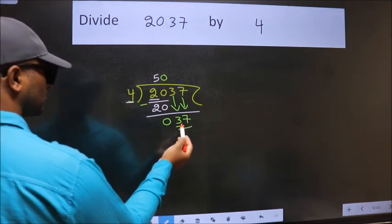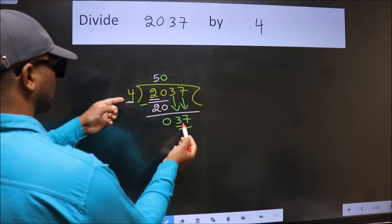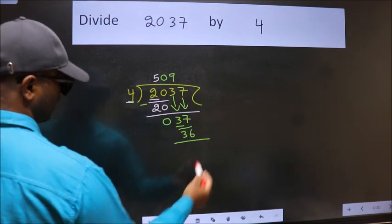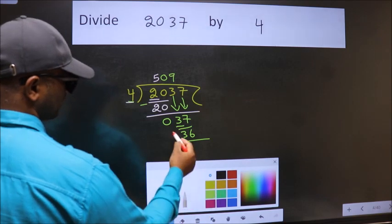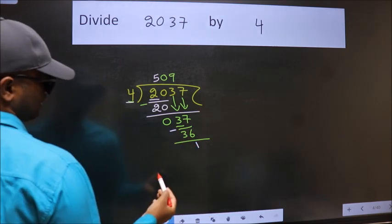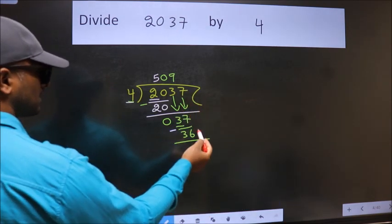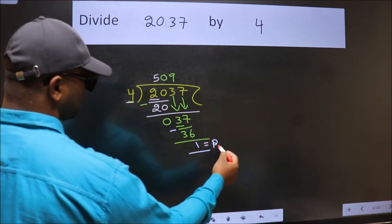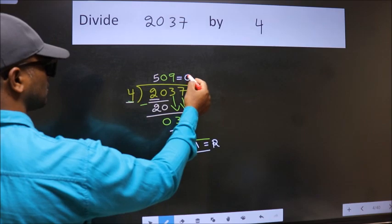A number close to 37 in the 4 table is 4 nines 36. Now, we subtract. We get 1. No more numbers to bring it down, so we stop here. This is our remainder and this is our quotient.